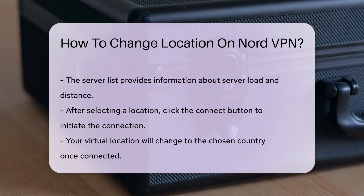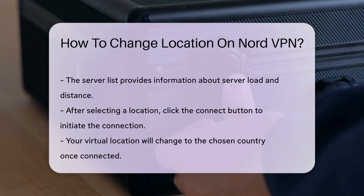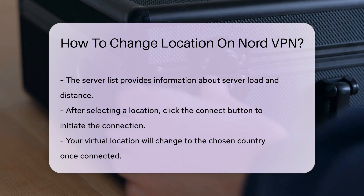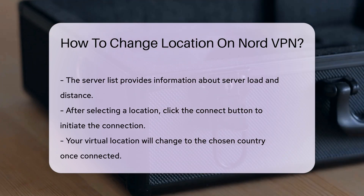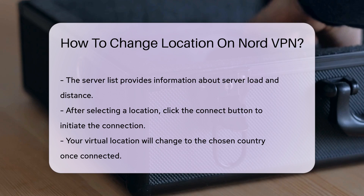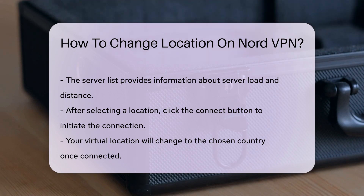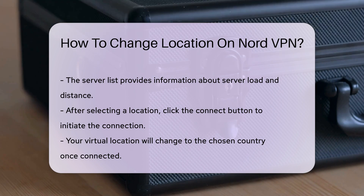After selecting your desired location, click on the Connect button. The application will initiate a connection to the selected server. Once connected, your virtual location will be altered to the chosen country. You can verify your new IP address by visiting a website that displays IP information.